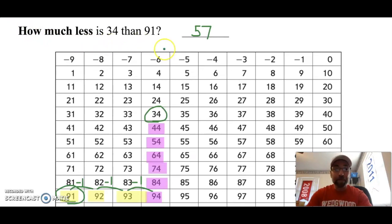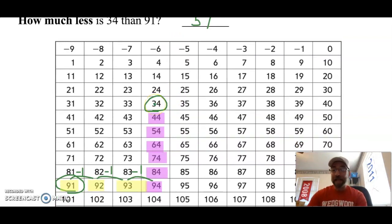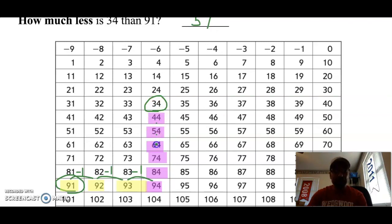So for this problem, hopefully you got 57. I started at 34 and I counted by 10s: 10, 20, 30, 40, 50, 60. But now I had to count backwards to get to my number. 60 minus 1 is 59, minus 1 is 58, and minus 1 is 57. Awesome job.